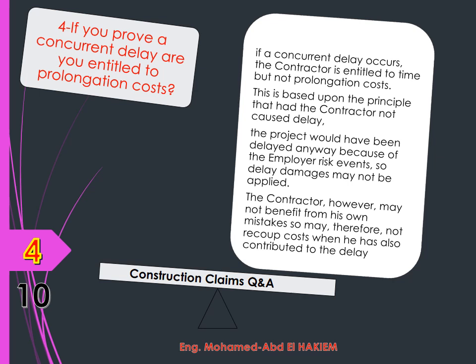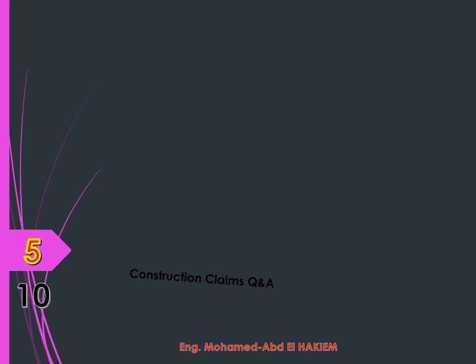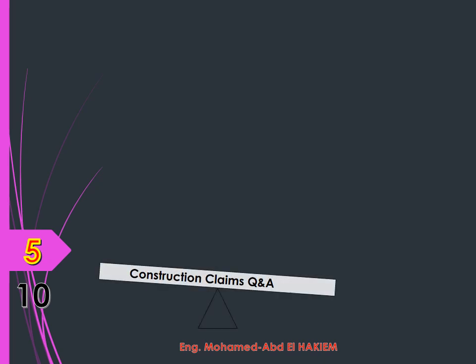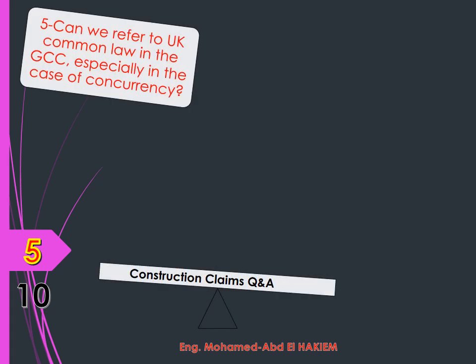Question 4: If you prove a concurrent delay, are you entitled to prolongation costs? Answer: The general principle is that if a concurrent delay occurs, the contractor is entitled to time but not prolongation costs. This is based upon the principle that had the contractor not caused delay, the project would have been delayed anyway because of the employer risk events, so delay damages may not be applied. However, the contractor may not benefit from his own mistakes and may therefore not recoup costs when he has also contributed to the delay.